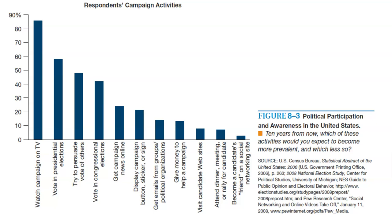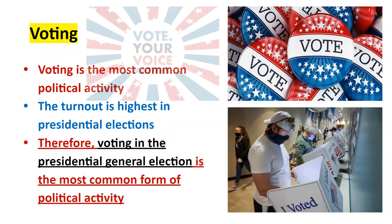This is part of our political efficacy — the idea of knowing what's going on in government and being able to take part in it. Voting is the most common political activity people participate in, and turnout is highest in our presidential elections. Voting in a presidential general election is the most common form because it gets the most press, the most coverage, and the most conversation.